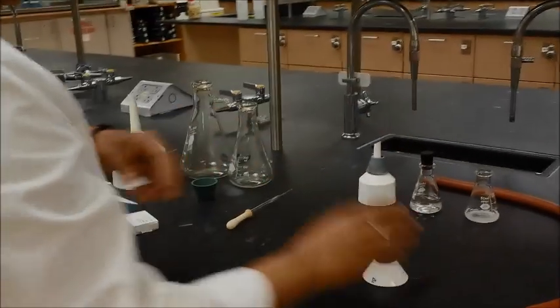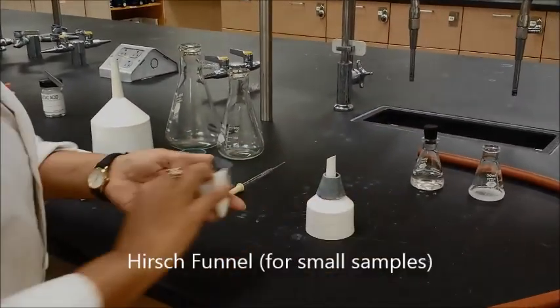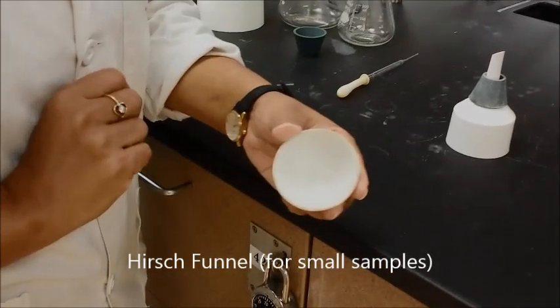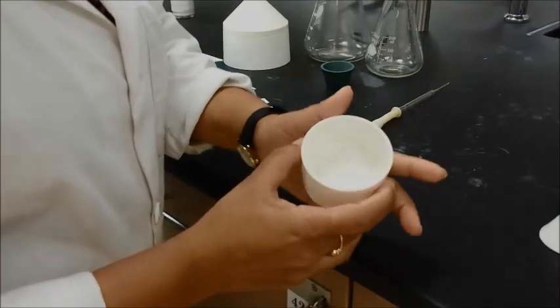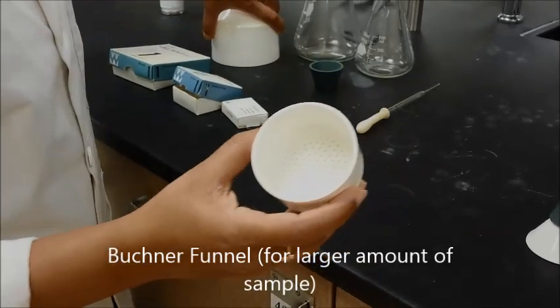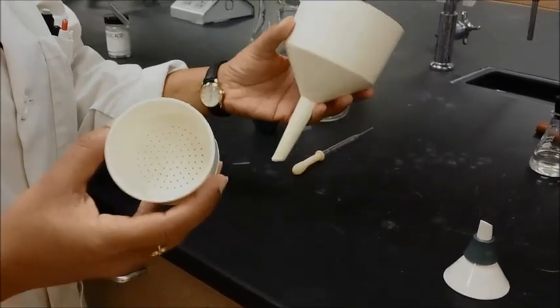Then you will need either a Hirsch funnel or what we call a Buchner funnel. The Hirsch funnel is very small, it's for small sizes or small amount of sample. When you have a Buchner funnel, you can have a Buchner funnel like this, which is this size, or you can have a larger one also, because it depends on how much sample you have.